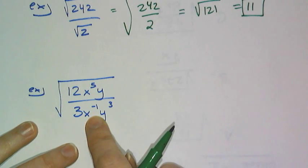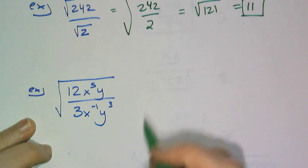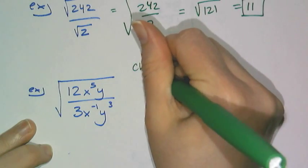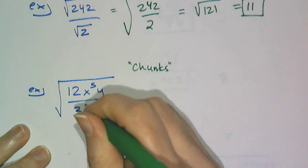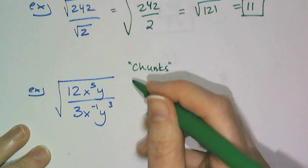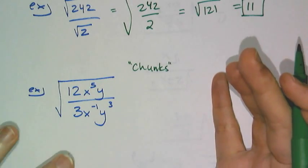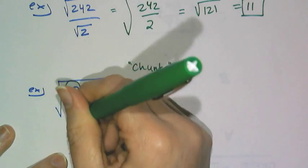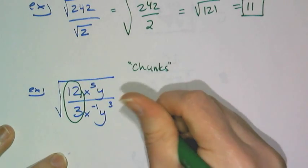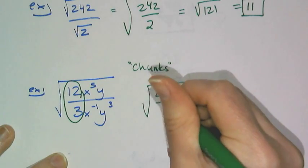And if you remember from the exponent problems, I told you about dealing with the problems in chunks, so I'm going to look at this problem in chunks as well. The square root is just the outside of the problem, so I'm going to deal with all the inside parts, like 12 over 3, which is just 4.